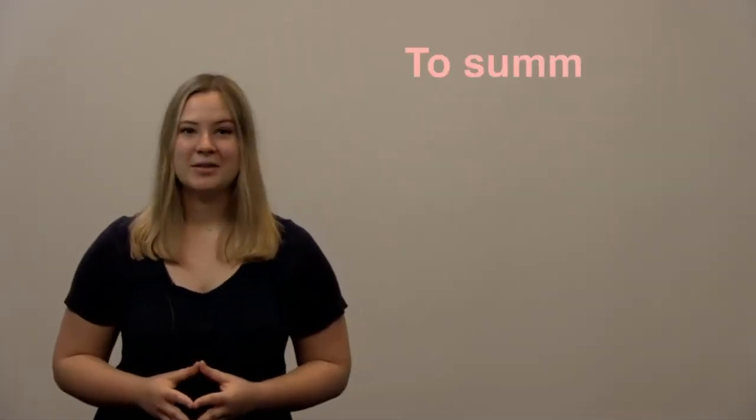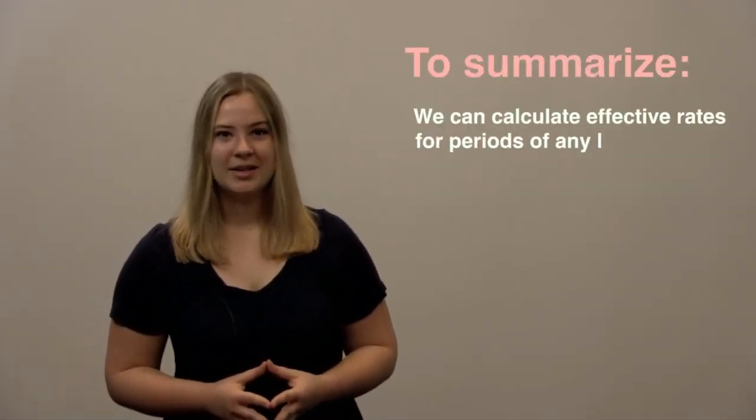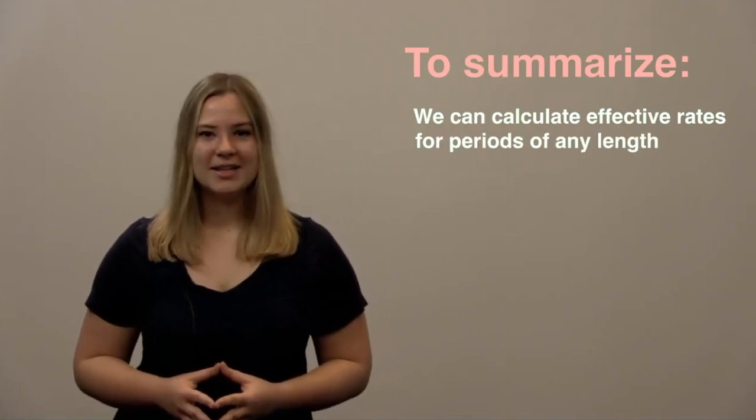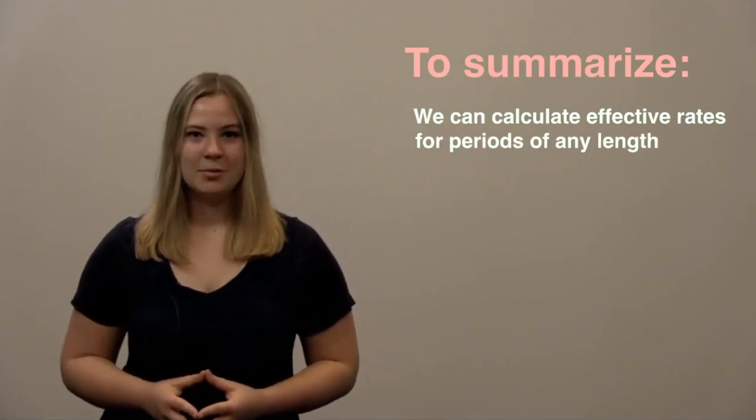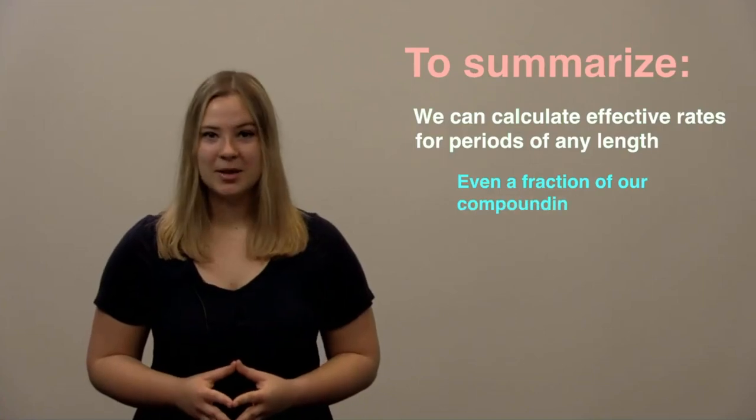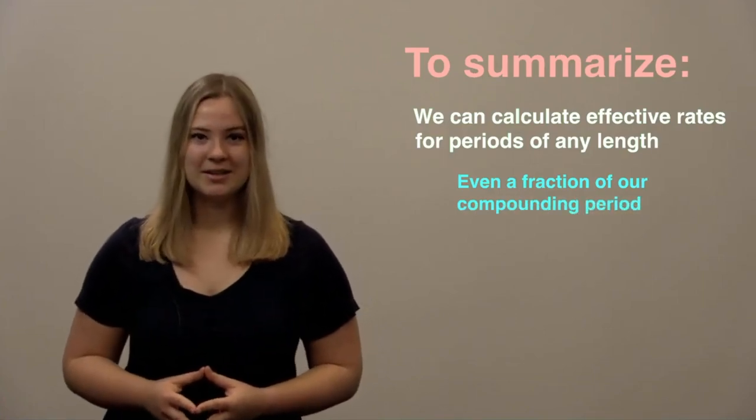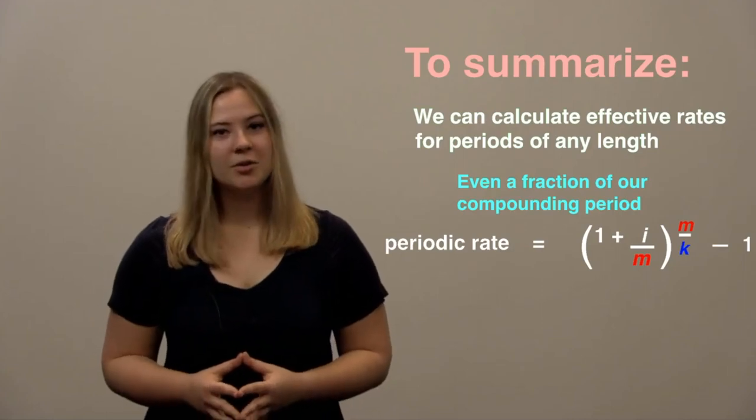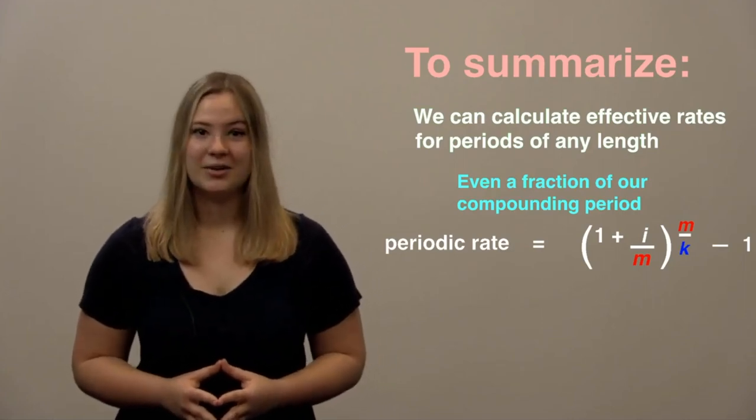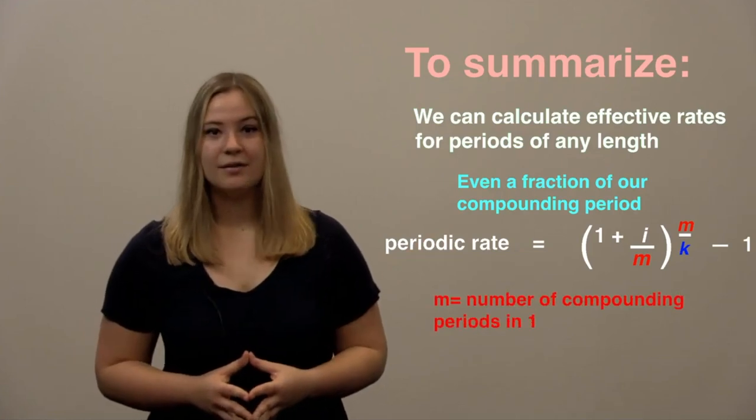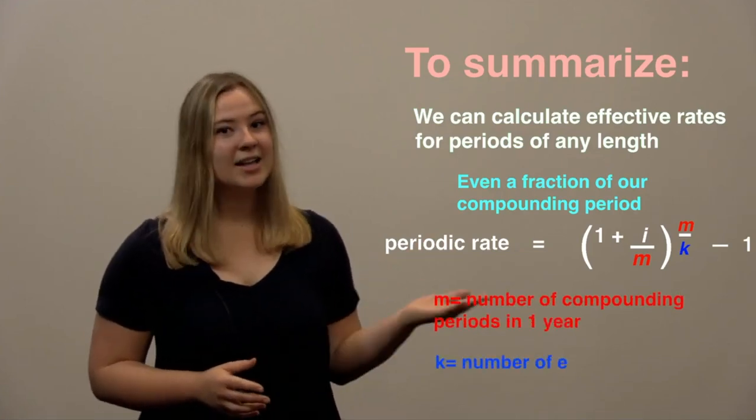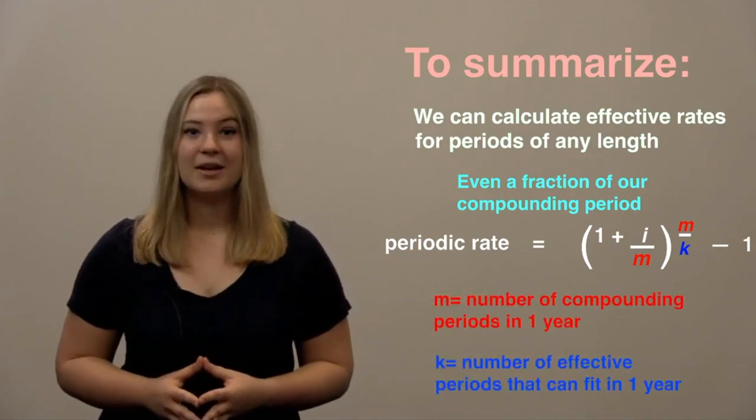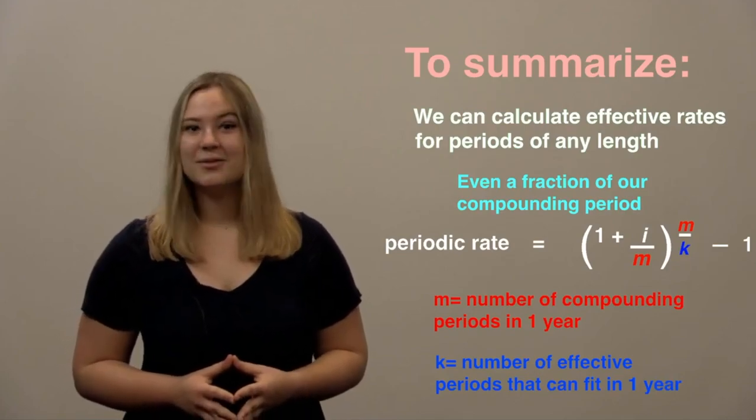Today, we learned how to solve for the effective rate of a period other than one year. We can apply this to more complex investing and borrowing problems, where the length of our investment can't be expressed in whole compounding periods. In these problems, we can use a fraction to represent the total number of compounding periods that occur, where m is the number of compounding periods that can fit in one year, and k is the number of effective periods that can fit in one year. Thanks for watching!